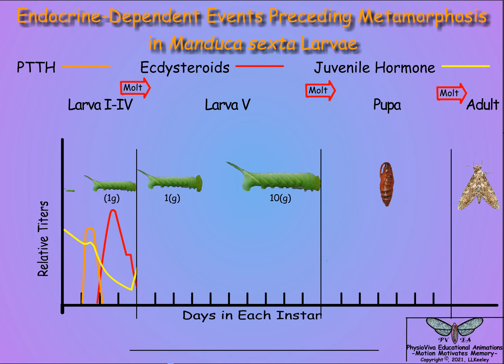These two milestones prepare the larvae for pupation and metamorphosis into an adult moth. First, attainment of a critical head capsule size of five millimeters indicates to the larvae that it has attained its last larval instar.